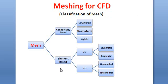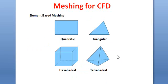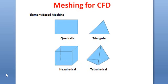Now looking at element-based mesh classification, it can be divided into 2D and 3D. In 2D, the elements are known as quadrilateral and triangular mesh. In 3D, they are known as hexahedral and tetrahedral mesh elements. This is the quadrilateral and triangular mesh for 2D, and in 3D these change into hexahedral and tetrahedral mesh elements.